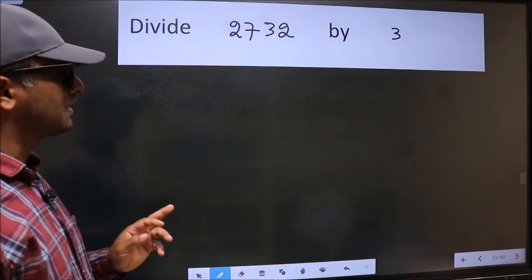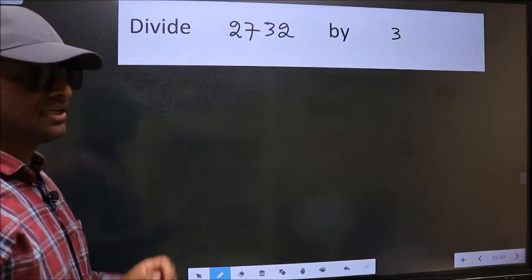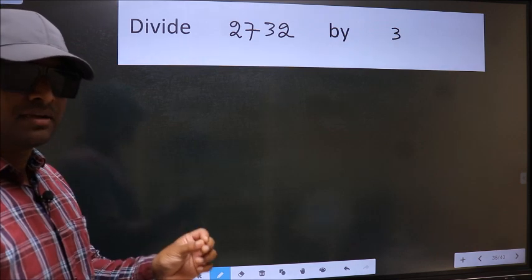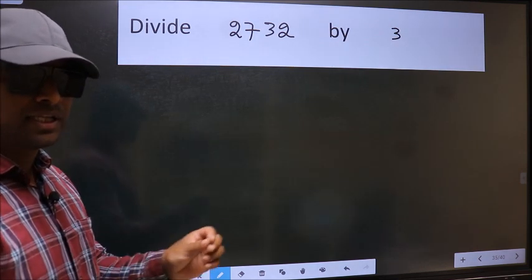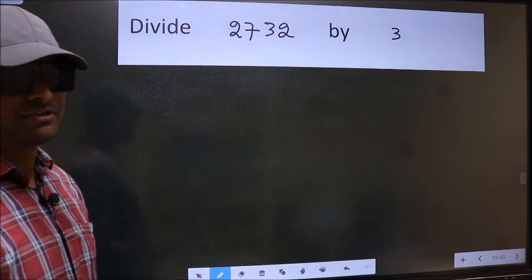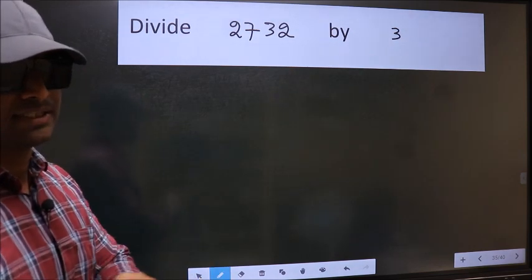Divide 2732 by 3. While doing this division, many do this mistake. What is the mistake that they do? I will let you know. But before that, we should frame it in this way.